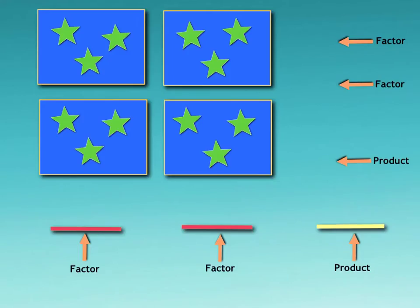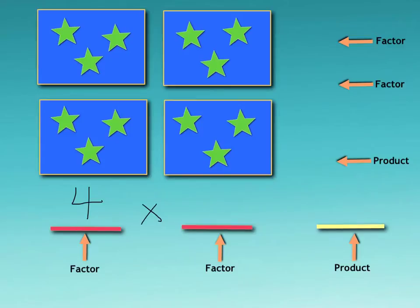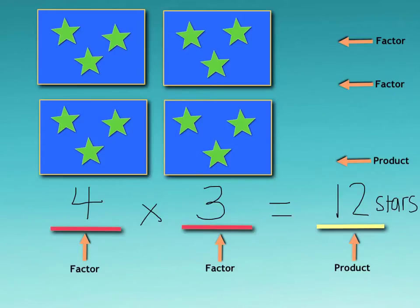Let's look at another multiplication problem. This is a model with four groups, and each group has three stars. If I were to write this multiplication problem, I could write it like this: four groups of three stars equals 12 stars. That's one way to write the multiplication problem, showing the factors four and three — the numbers we multiply together to get our product, which is 12.